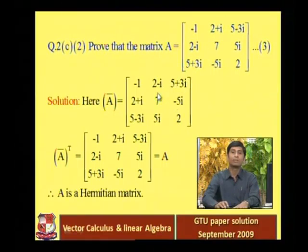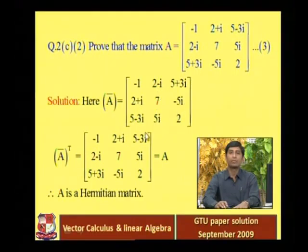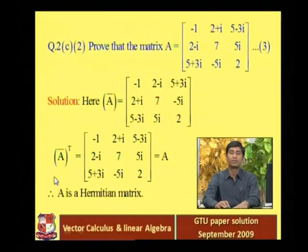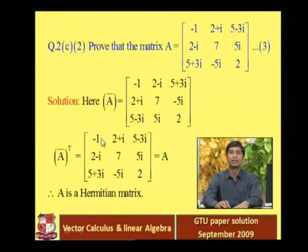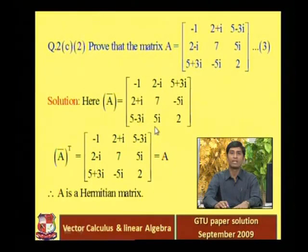The conjugate matrix is formed: 2 + i → 2 minus i; 5 minus 3i → 5 + 3i; 2 minus i → 2 + i; 5i → minus 5i; 5 + 3i → 5 minus 3i; minus 5i → 5i. Now we transpose this conjugate matrix A-bar. The first row [minus 1, 2 minus i, 5 + 3i] becomes the first column; the second row [2 + i, 7, minus 5i] becomes the second column; the third row [5 minus 3i, 5i, 2] becomes the third column.